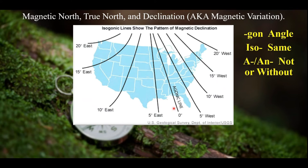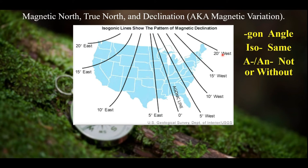A quick note on the east and west labels: even though 'west' appears on the right side of the map near the east coast, it simply means those isogonic lines are angled in the westerly direction, while the lines on the left are angled in the easterly direction.